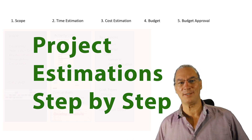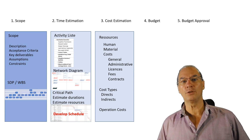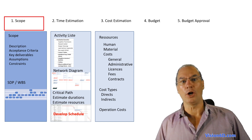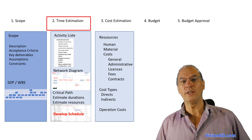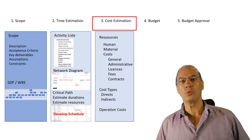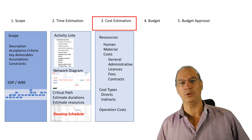Project estimation. There are simple steps to follow. First, we need to know what is in scope — what is in the project and what is not. After that, with the activity list, we'll do time estimations. With time estimations, we can move on and do cost estimation.